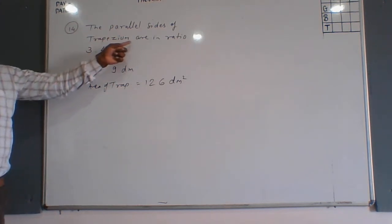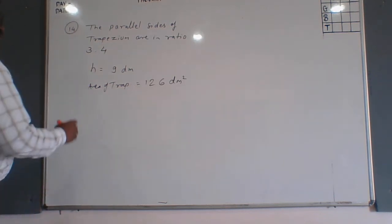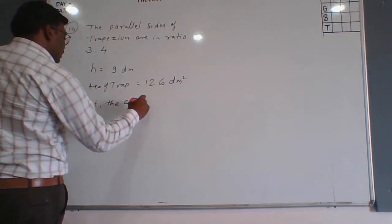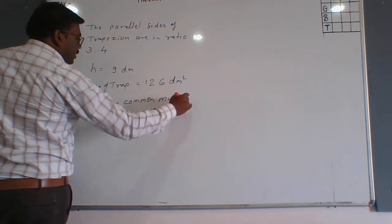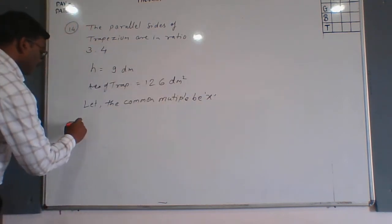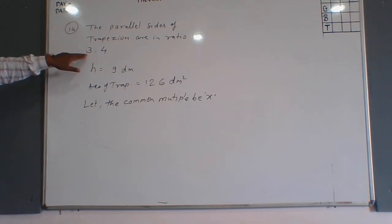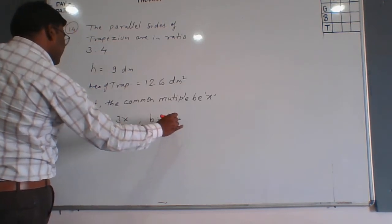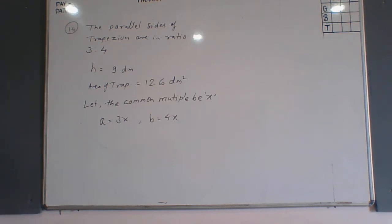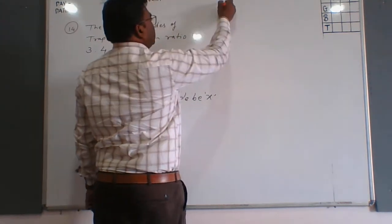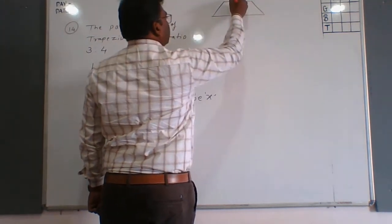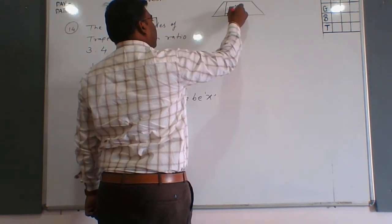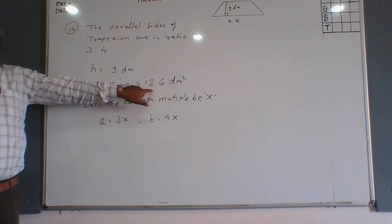Since the parallel sides are in the ratio 3 is to 4, whenever a ratio question is given, we let the common multiple be x. Therefore the two parallel sides are 3x and 4x. This is the trapezium with one side 3x and the other 4x, and the distance between the parallel lines is 9 dm.